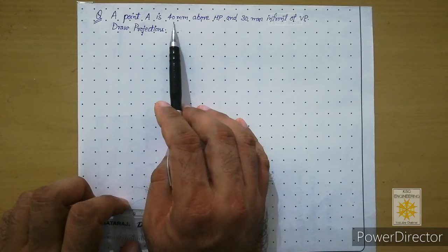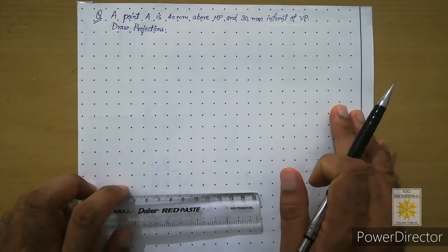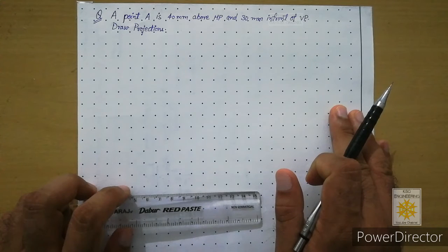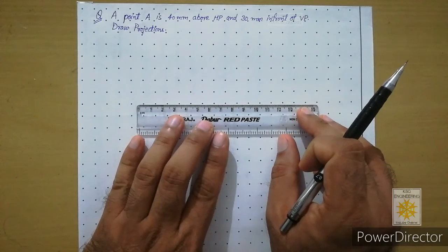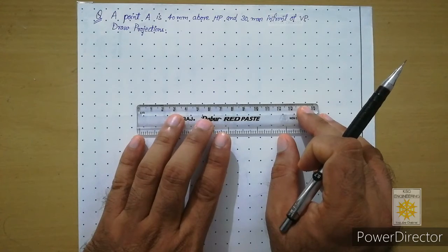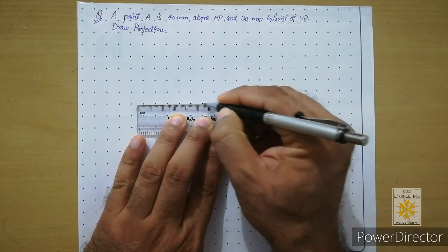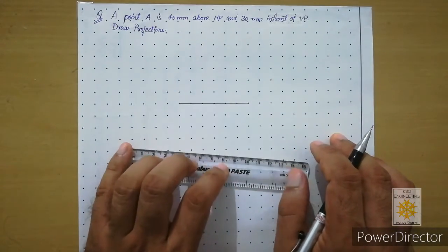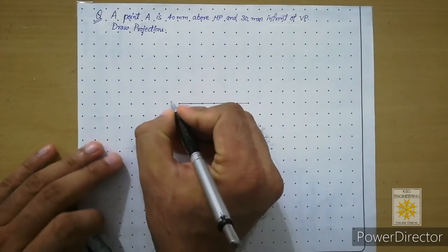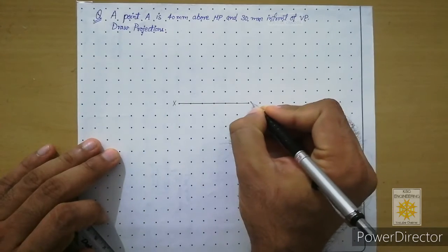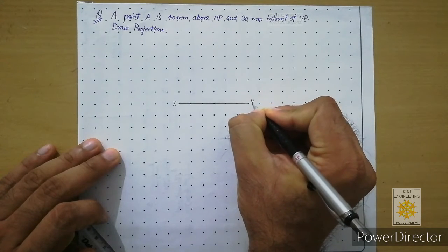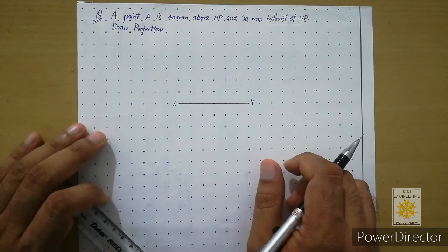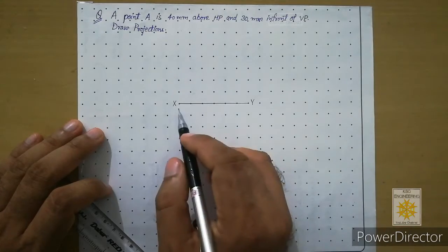We are considering the case of a point in the first quadrant. To draw projections of a point, we first need to draw a reference line of around five to six centimeters. Draw this line continuous thick, and label the left end as capital X and the right end as capital Y. After that, mark a reference point on this reference line.